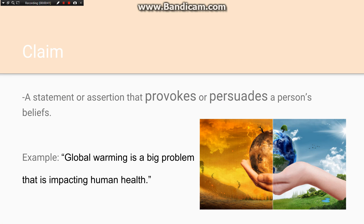The first aspect is the claim, and the claim is a statement or thesis that a person makes to persuade or provoke the readers. For example, I can make a claim and say, global warming is a big problem that is impacting human health. This is my claim that I make to address the opposing audience.